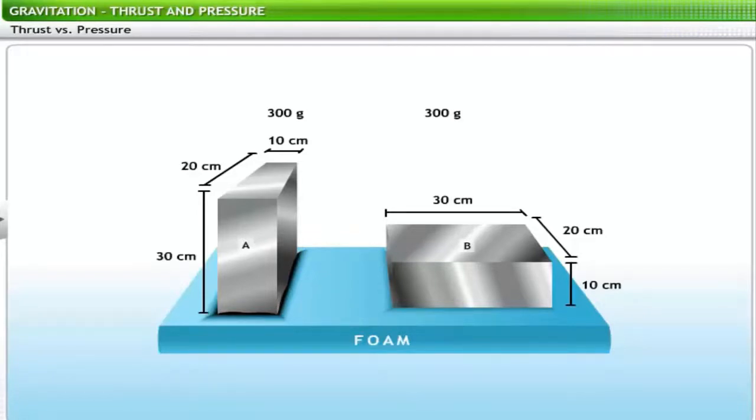Considering that both the blocks have the same length, breadth, height and weight, why do you think we see this difference in the compression of foam? This difference can be attributed to the difference in pressure exerted by each block. Block A was placed vertically over the sheet of foam, while block B was placed horizontally.